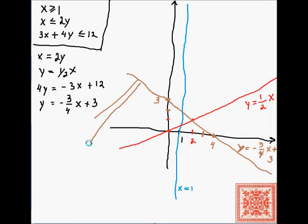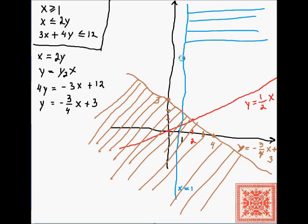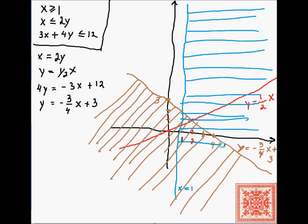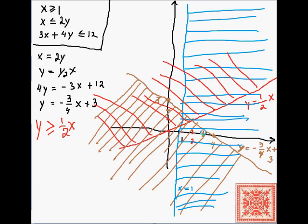This is the half plane satisfying the third constraint. We can take any point in this half plane to verify it satisfies the inequality. This is the half plane satisfying the first inequality x ≥ 1. Graphing the half plane for the third inequality, the intersection of the three half planes is a triangle with three corner points.